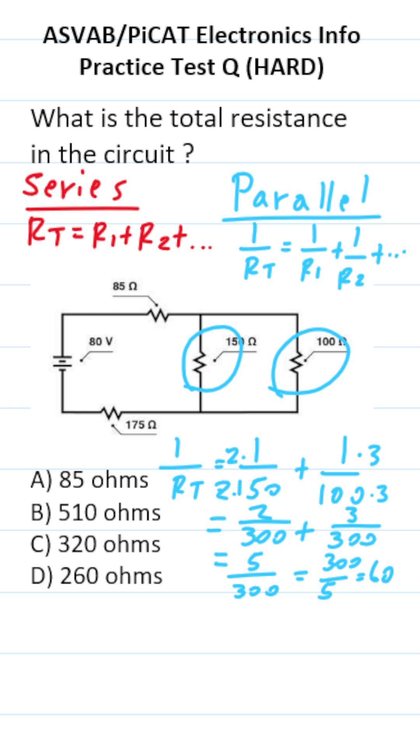So the total resistance of these two resistors that are in parallel is 60 ohms. All right, so now we're going to go ahead and calculate the total resistance in the circuit. This circuit and this circuit are in series, and now we know that the total resistance of these two resistors that are in parallel are 60 ohms.